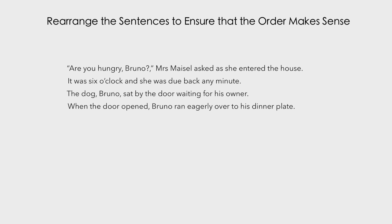So let's think about what this whole passage is about. We know there's a dog called Bruno, and it seems that he is waiting for his owner to get back so he can be fed. He's sitting by the door waiting for her, and we can assume that she is called Mrs Maisel. Now let's go through each sentence and think about whether its current placement is appropriate.